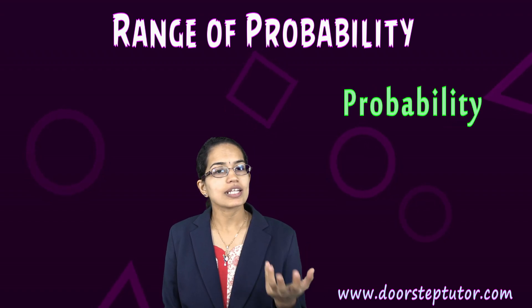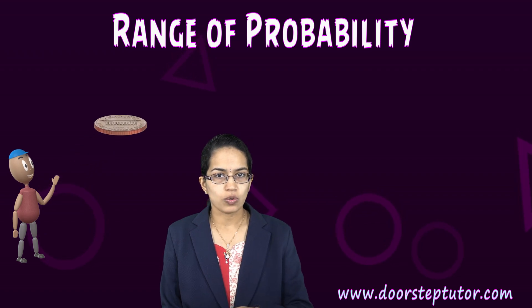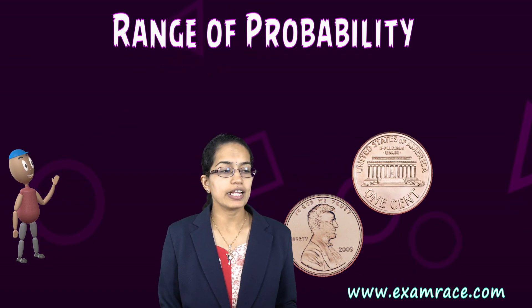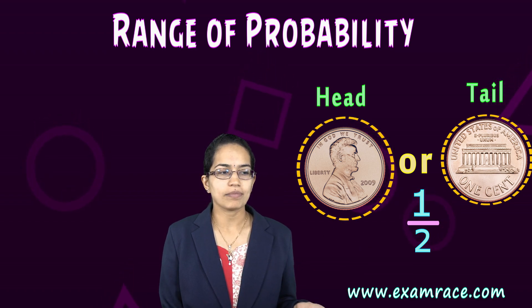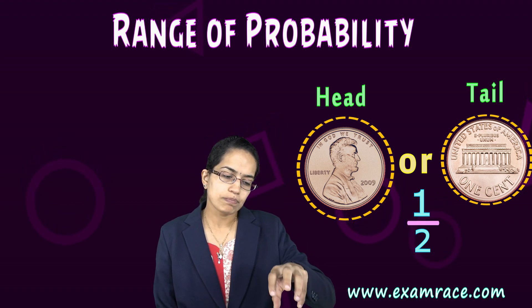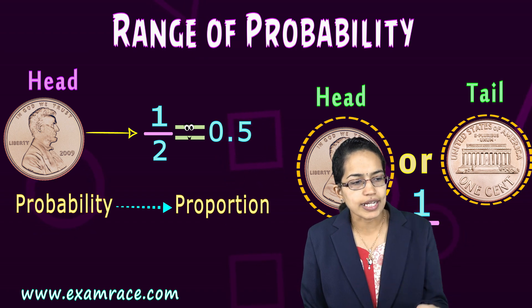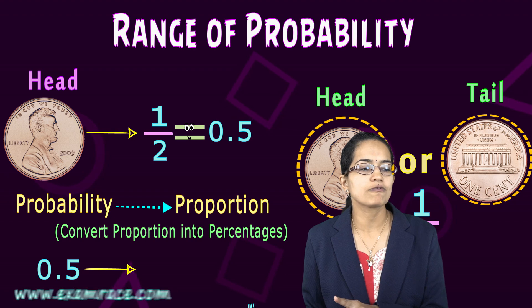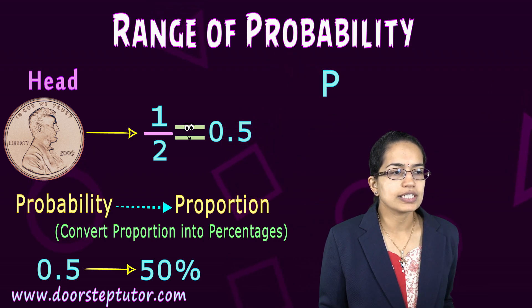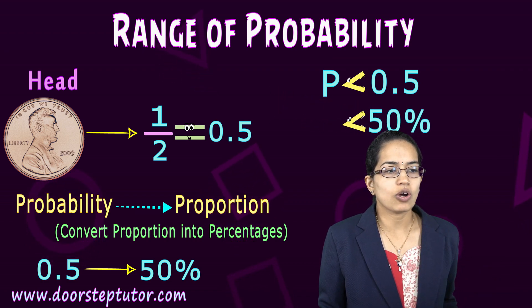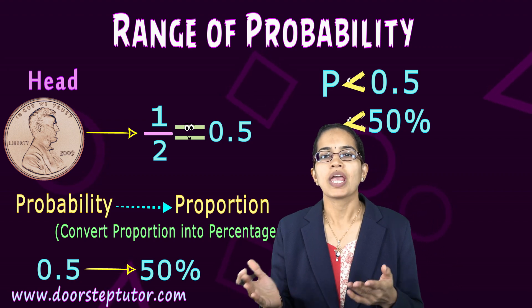Probability is simply a proportion. Going back to the head-and-tail example: when you toss a coin, the probability of getting head or getting tail is 1/2. There are two cases — either head or tail — so the probability of head is 1/2, which is 0.5. I can convert this proportion into a percentage: multiplied by 100, it comes out to be 50%. Similarly, if I have a probability of less than 0.5, it means there is less than a 50% chance of that outcome being selected.